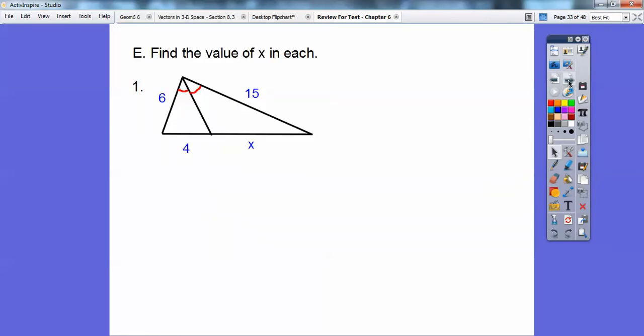Okay, so find the value of x in each. Okay, this one is an angle bisector. So if an angle bisector, this angle bisector cuts up this opposite side into proportions with the sides next to them. So 4 over 6 equals x over 15. Alright, so that's how you solve for that one. And you get x equals 10 on that.